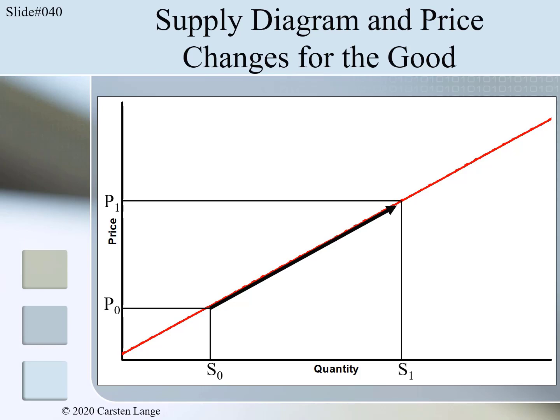Economists call the change of price and the change of supply modeled here sometimes a move along the curve. If you look at the arrow and the changing combinations of P0, S0 to P1, S1, you can understand why it is called a move along the curve.